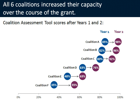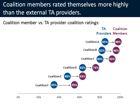You can also use dot plots for comparisons over time — it's an alternative to the line chart. Here we've got coalition assessment scores after year one and year two of a grant. You can also use dot plots for triangulation. For example, you might ask a coalition member to rate themselves and their own progress, and then also get an external perspective like a technical assistance provider who's not receiving grant funding but is close to the work and can make their own ratings.